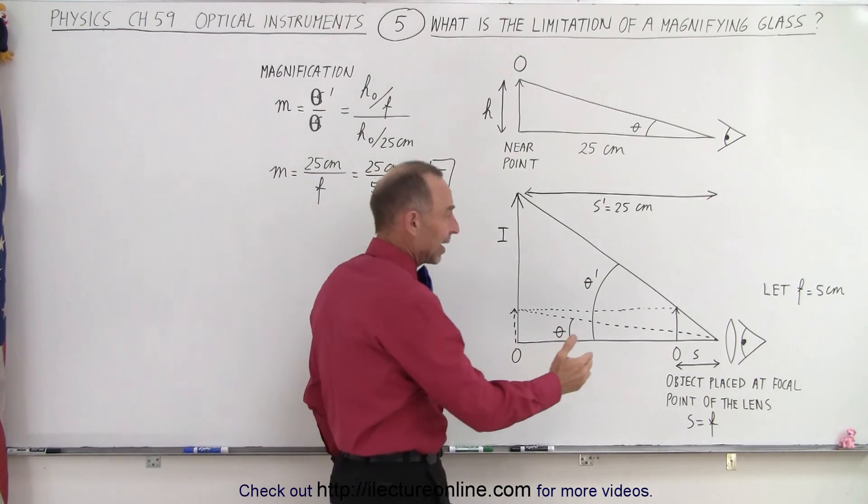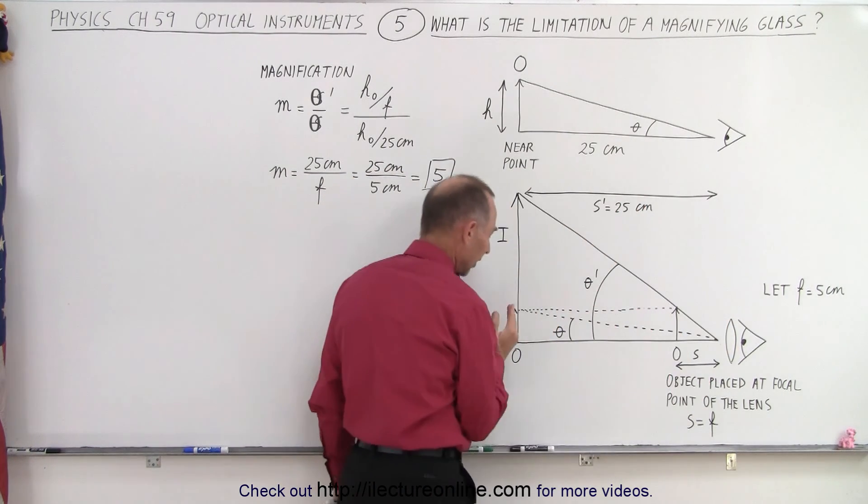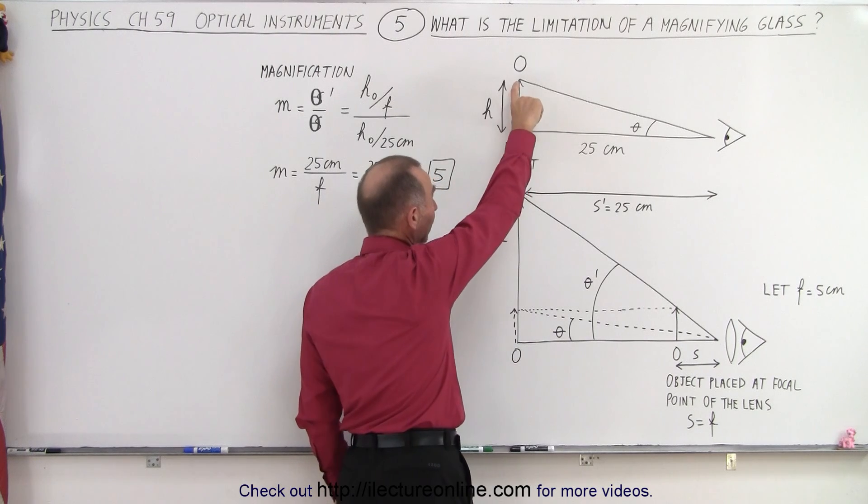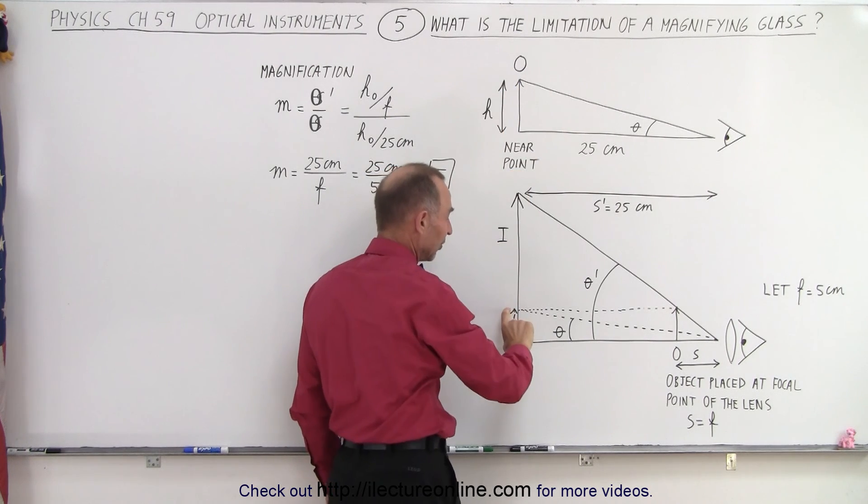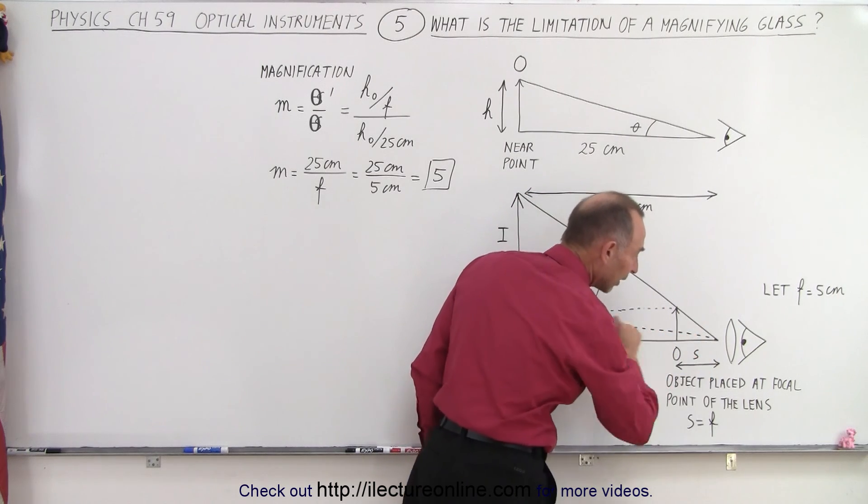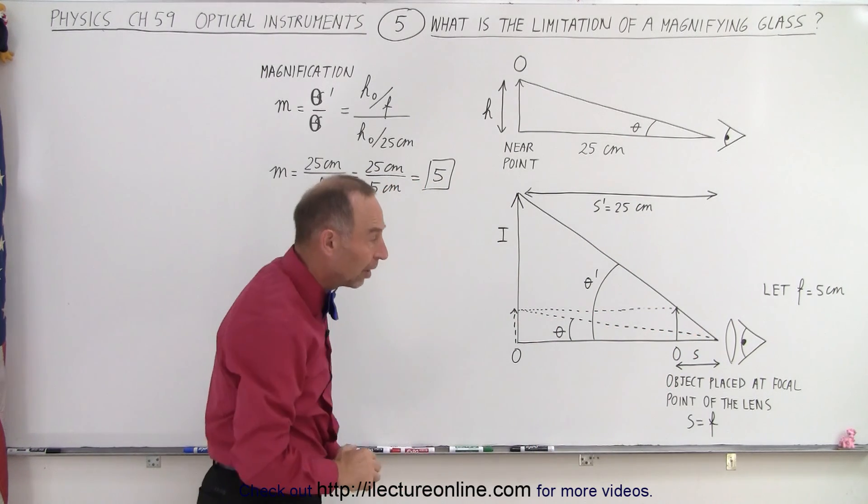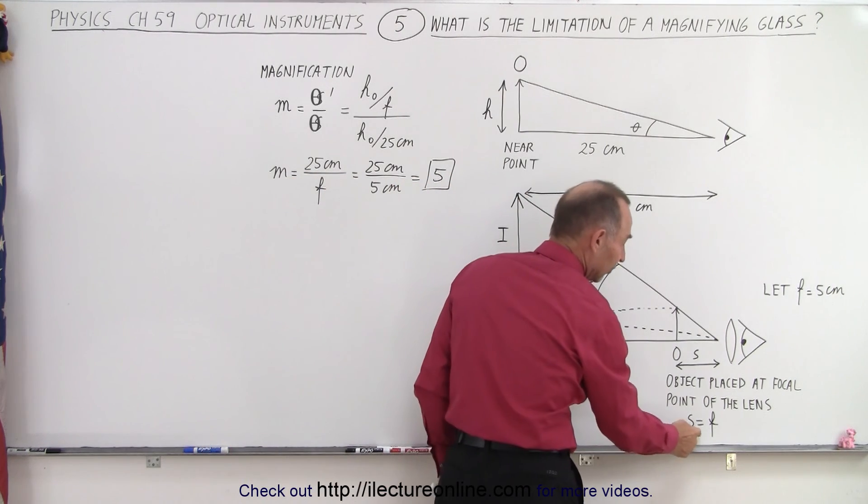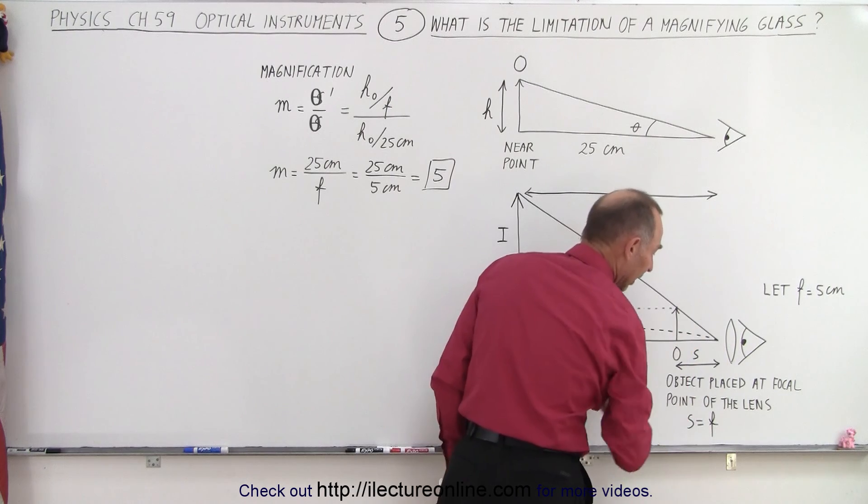But what if we put a magnifying glass here? It allows us to take the object that used to be at the near point of 25 centimeters and move it closer. Let's say we move it right there, about where the focal point is of the magnifying glass. So that means the object distance is equal to the focal length of the lens.